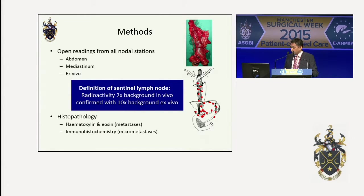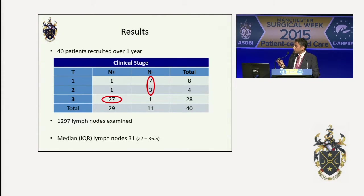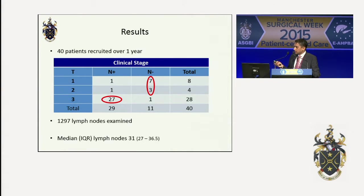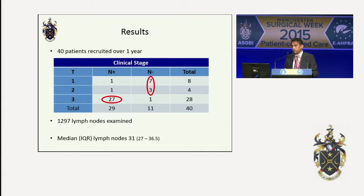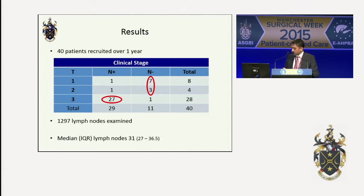Myself and a specialist upper GI pathologist examined all nodes using H&E for overt metastases and immunohistochemistry for isolated tumor cells and micrometastases. We recruited 40 patients over one year. Two-thirds of our patients clinically had T3 node positive disease, and a quarter had T1 or T2 node negative disease. There were no complications related to the endoscopic injection or the laparoscopic procedure. We examined almost 1,300 lymph nodes — 652 from the abdomen and 645 from the mediastinum — with a median lymph node harvest of 31 per patient.